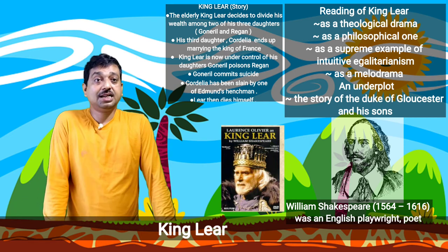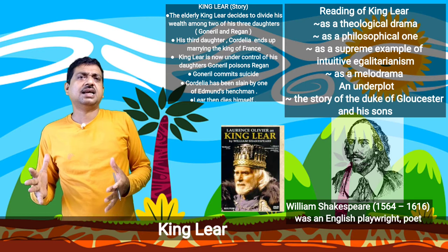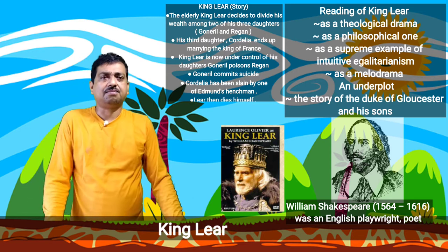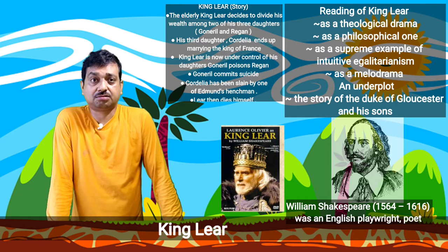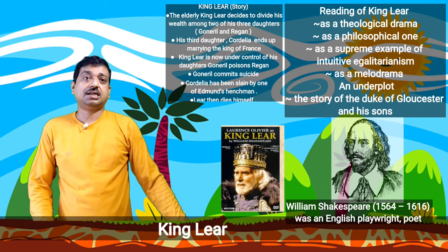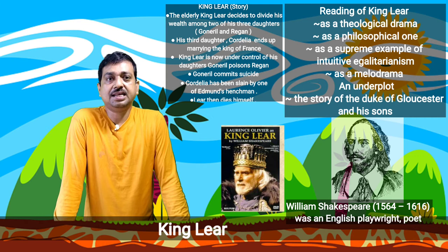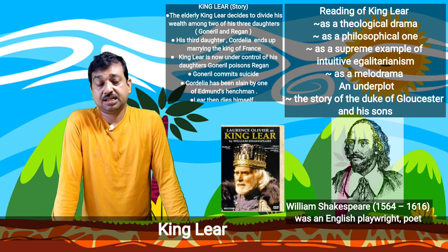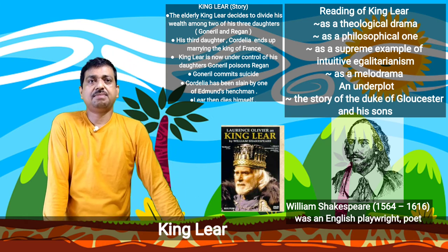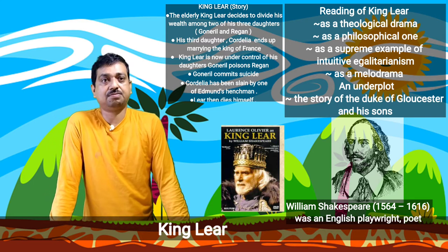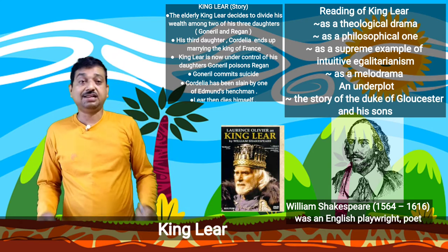King Lear is the most titanic of Shakespeare's great tragedies. It also contains a subplot — the story of the Duke of Gloucester and his sons. The double plot provides parallels in the fates of Lear and Gloucester: the ruin of both men is brought about not only by their children's ingratitude but also by their own lack of insight and judgment.